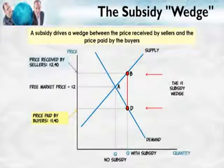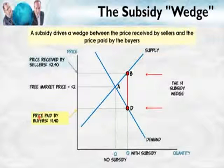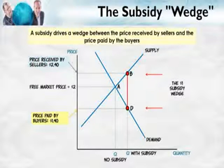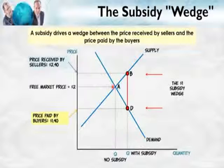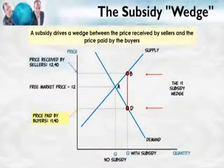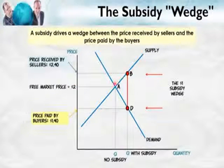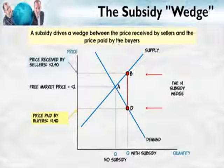Notice the key idea: it doesn't matter whether the suppliers receive the check from the government or whether the buyers receive the check. On net, when all is said and done, the sellers will receive $2.40 per unit and the buyers will pay $1.40 per unit. By comparing with the free market price, we can see who gets the relative gain. In this case, both suppliers and demanders get some of the gain. Suppliers used to get $2, now they get $2.40 — that's 40% of the gain. Buyers used to pay $2, now they pay $1.40 — that's 60% of the gain.